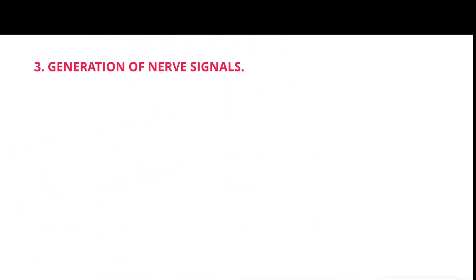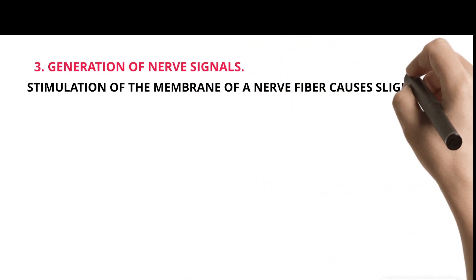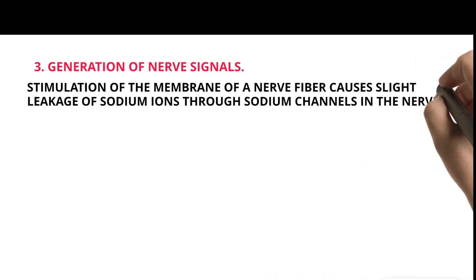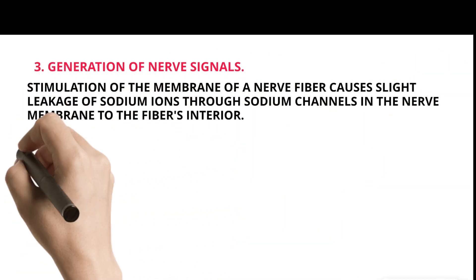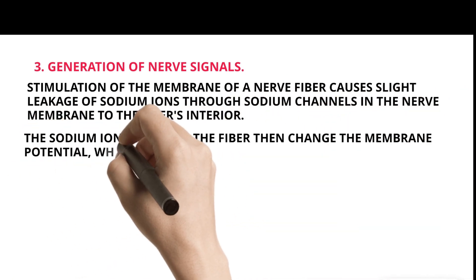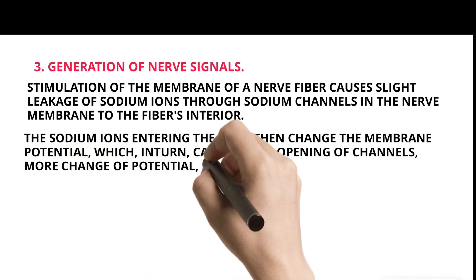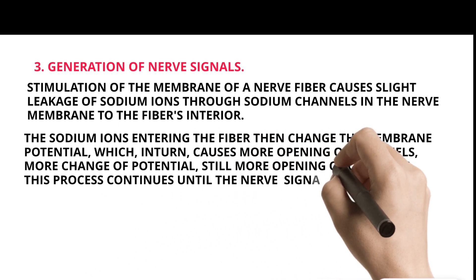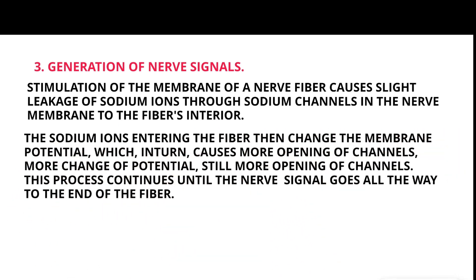Generation of Nerve Signals: Stimulation of the membrane of a nerve fiber causes slight leakage of sodium ions through sodium channels in the nerve membrane to the fiber's interior. The sodium ions entering the fiber then change the membrane potential which, in turn, causes more opening of channels, more change of potential, and still more opening of channels. This process continues until the nerve signal goes all the way to the end of the fiber.